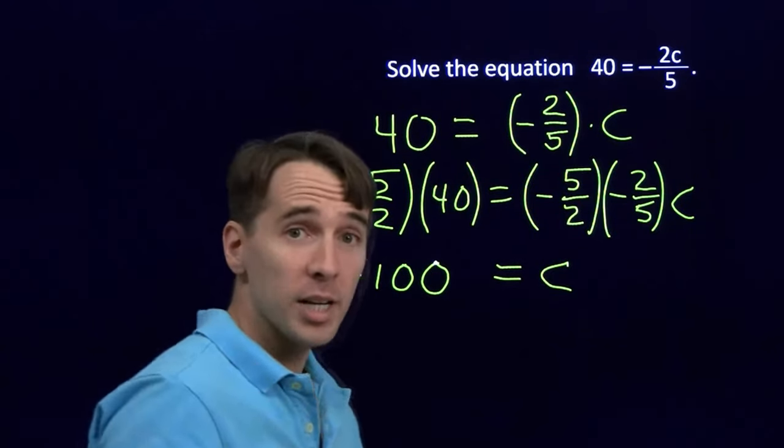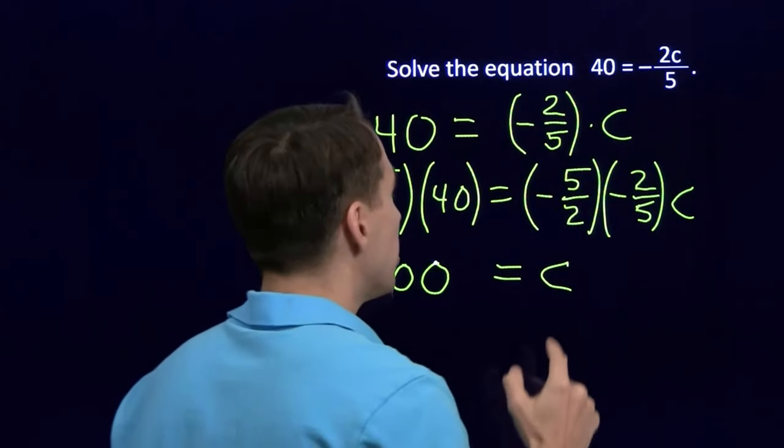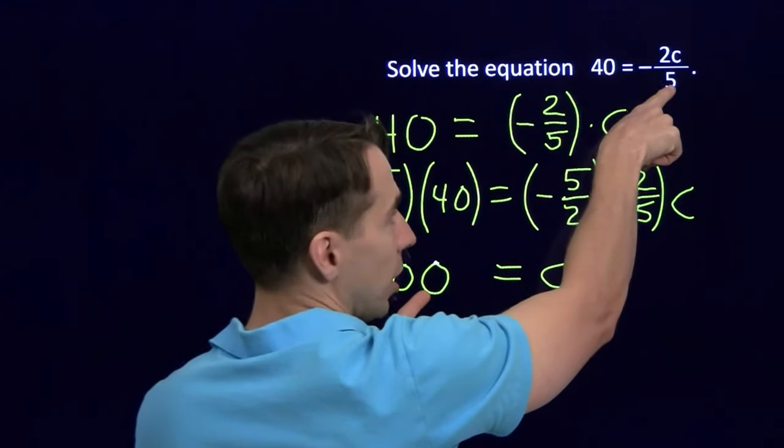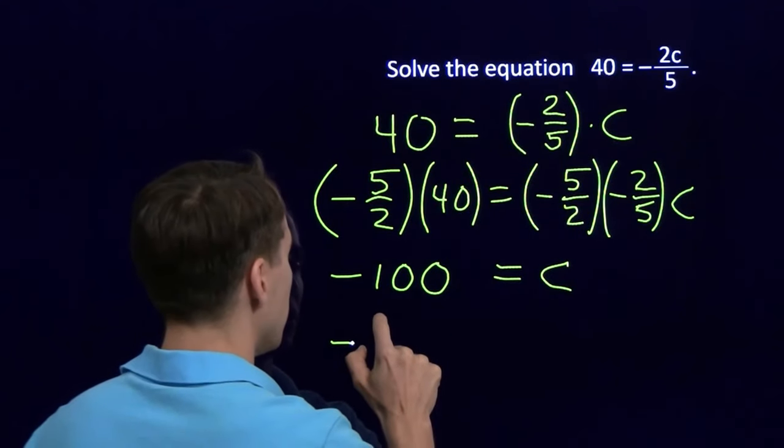Now, a great thing about equations, again, is we can check our answers. We can put negative 100 back into this equation and make sure we get the right answer. Make sure that 40 comes out. We put negative 100 in there for c. So let's check that out.